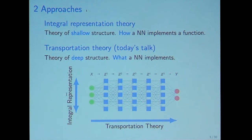There are two approaches: integral representation theory and transportation theory. Today's talk is mainly about transportation theory. The integral representation theory is the theory of shallow structure, and the transportation theory is the theory of deep structure.